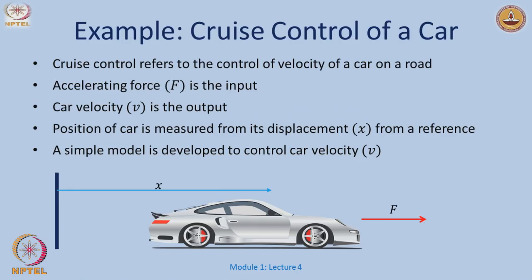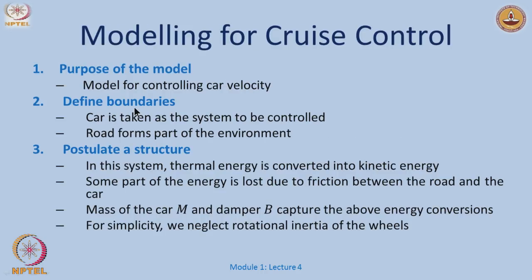The first example we will deal with is a very simple model of a cruise control of a car. Cruise control refers to the control of velocity of a car on a road, where the input comes in the form of some kind of accelerating force. The measured output is usually the car velocity, and we usually measure the position of the car — how much distance it has travelled, typically from a reference point.